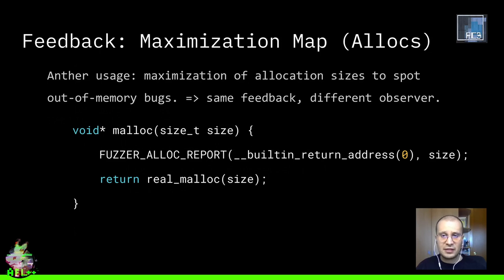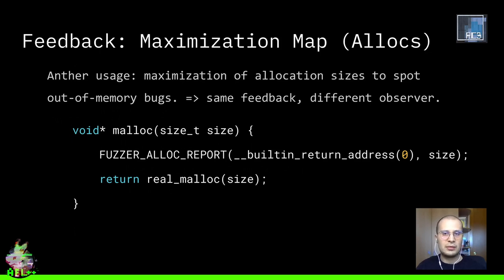The very same feedback — the same code with the same implementation — can be used to do a very different job, resulting in a very different outcome, by changing very few lines of code in the target to report, instead of the number of executions of edges, the size of allocations. For instance, one possible usage of a maximization map is to maximize the size of mallocs to spot out-of-memory bugs.